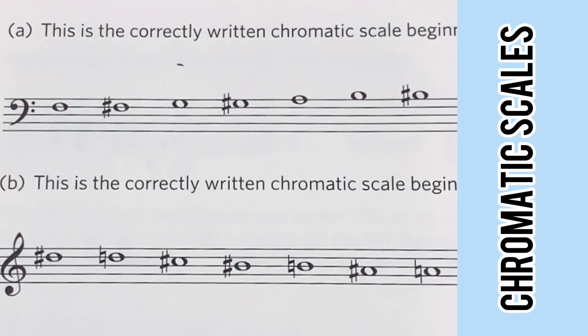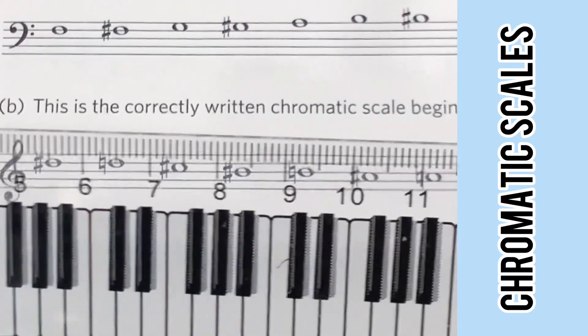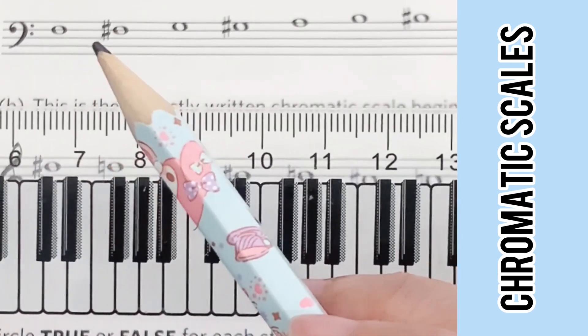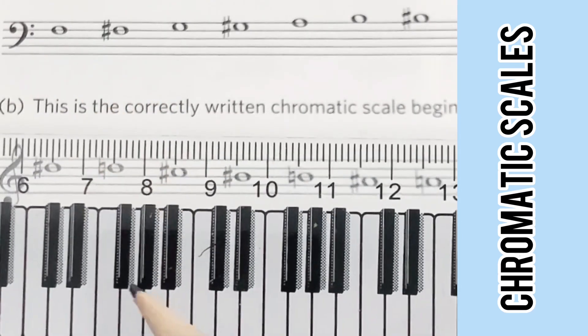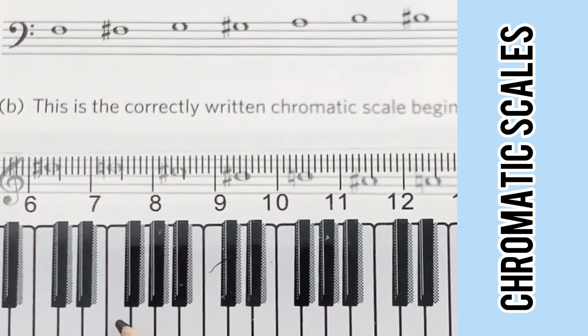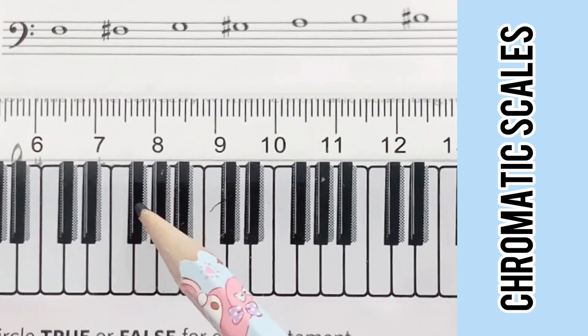Hi there, welcome to our tutorial on chromatic scales. The first question begins on F, so with the help of this keyboard ruler we shall figure out if the accidentals on this scale are correct. First we have F, F sharp, G, G sharp, A.